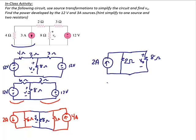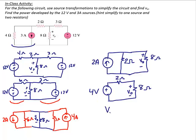Since I'm looking for a voltage and want to use the voltage divider, I'm going to do one more source transformation and write this as a voltage source in series with two resistors. 2 times 2 gives me a 4-volt source, and then I copy down my 2-ohm resistor. So V0 would be equal to 8 over 10 times 4 — that's the voltage divider. So V0 is 3.2 volts.